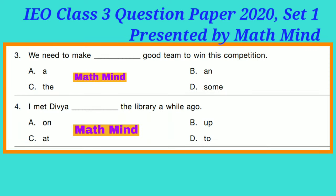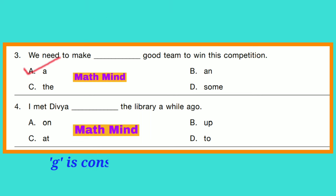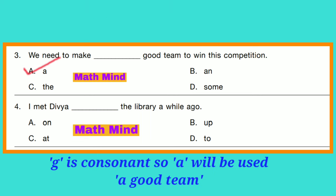Question 3: 'We need to make dash good team to win this competition.' Option A is correct: 'a good team.' G is a consonant, so 'a' will be used.